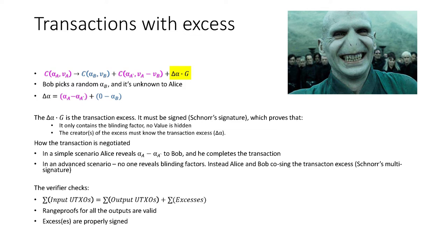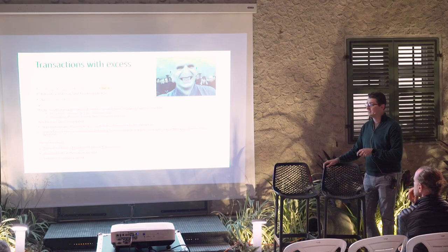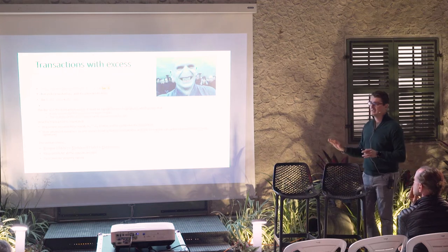The verifier, when it receives such a transaction, checks that the sum of inputs equals the sum of outputs plus the excess — there can actually be several excesses. It also checks that all range proofs are valid and that the excess is signed. This is basically the pattern of Mimblewimble.